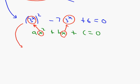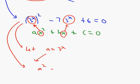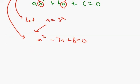Let a equal 3 to the x and make a substitution. The equation becomes a squared minus 7a plus 6 equals 0, which I can factor and solve. It factors as (a minus 6)(a minus 1) equals 0 — because negative 1 times negative 6 is positive 6, and negative 1 plus negative 6 is negative 7. So a equals 6 or a equals 1.